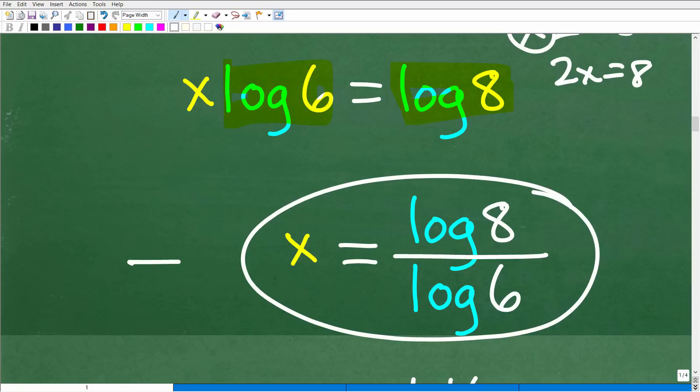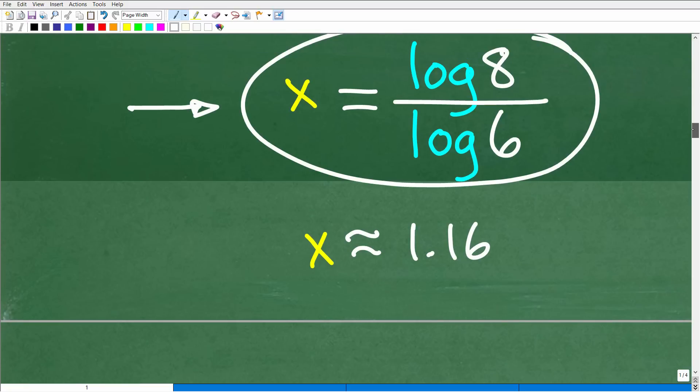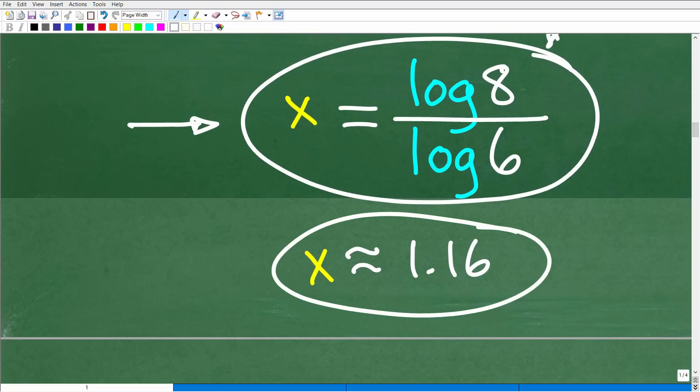Now, once you show your work like this, now you can break out your calculator. Oftentimes, your teacher will be perfectly happy with an answer like this. But if the problem states find a decimal approximation or write your answer as a decimal, well, then you're going to have to get your calculator out and type in log 8 divided by log 6, and you'll get x is approximately 1.16.